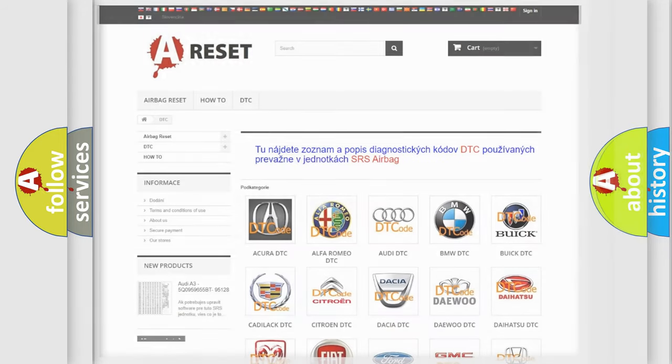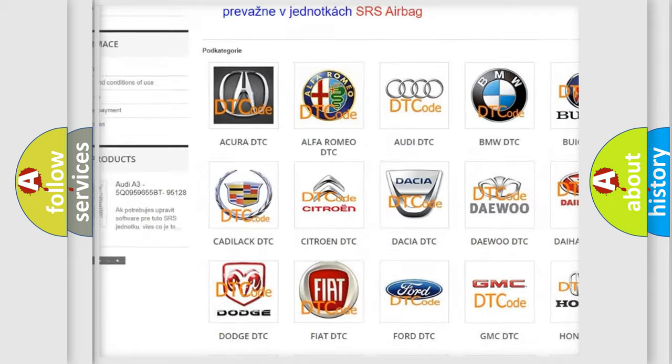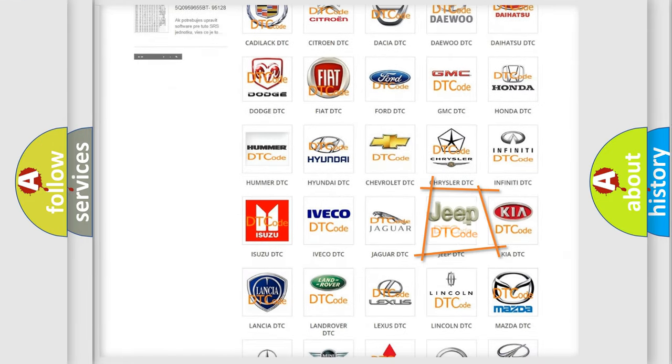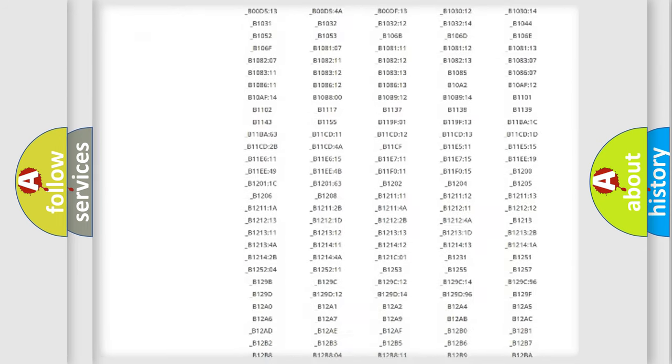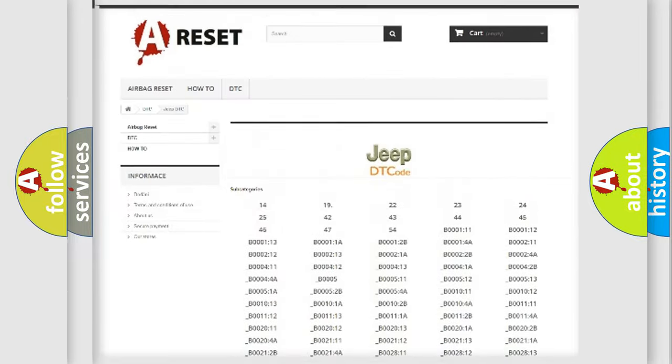Our website airbagreset.sk produces useful videos for you. You do not have to go through the OBD-2 protocol anymore to know how to troubleshoot any car breakdown. You will find all the diagnostic codes that can be diagnosed in Jeep vehicles.